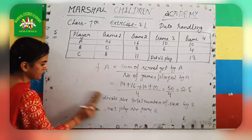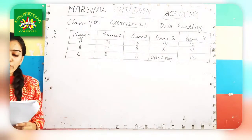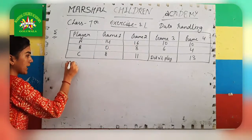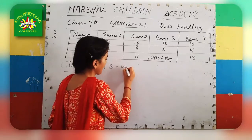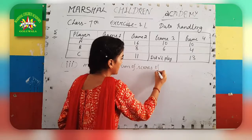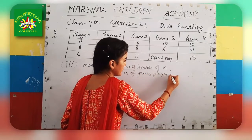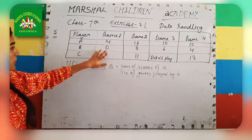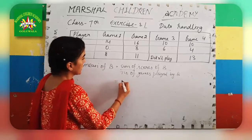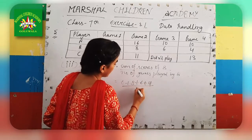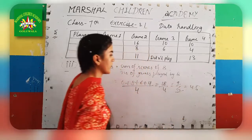The 3rd question: B played all 4 games — how do you find the mean? Mean of B equals sum of scores of B divided by number of games played by B. Here there is a 0, which doesn't mean B didn't play — B scored 0. So: 0 plus 8 plus 6 plus 4, divided by 4, equals 4.5.